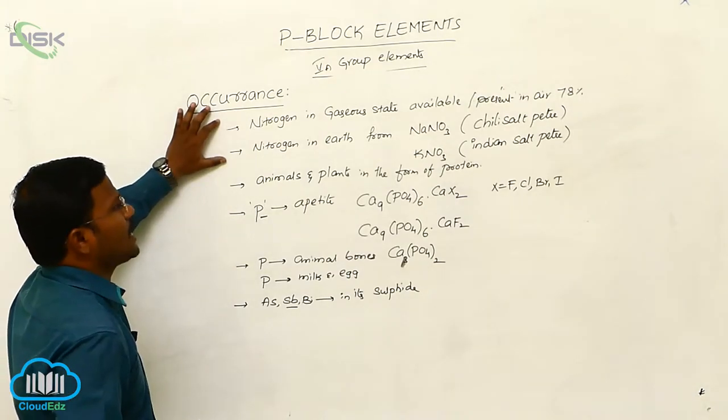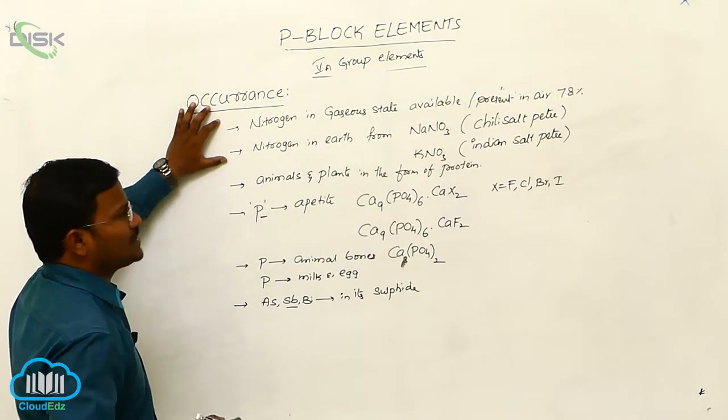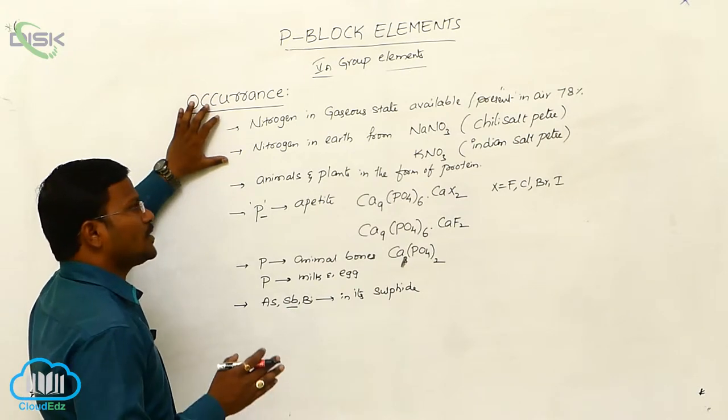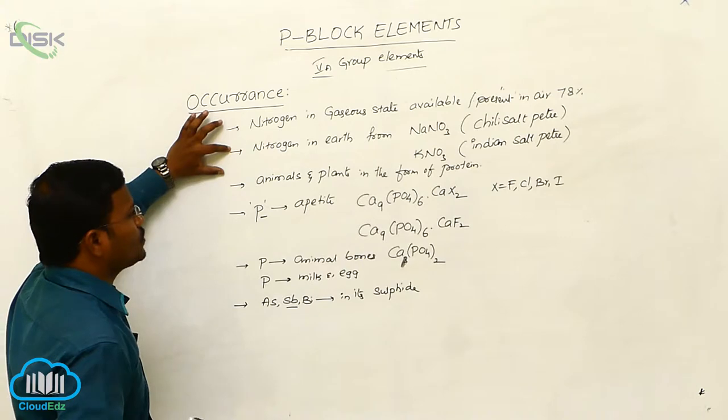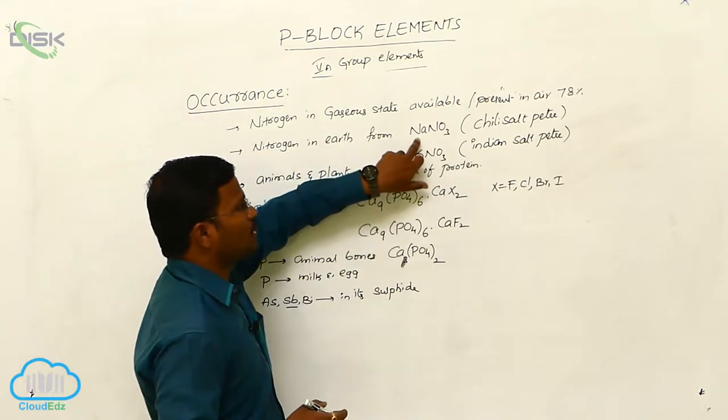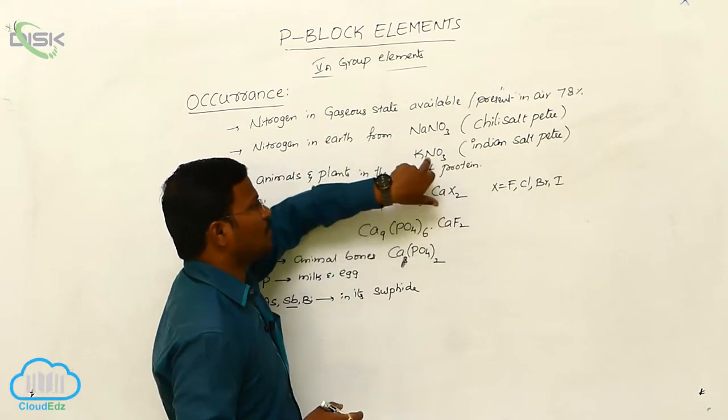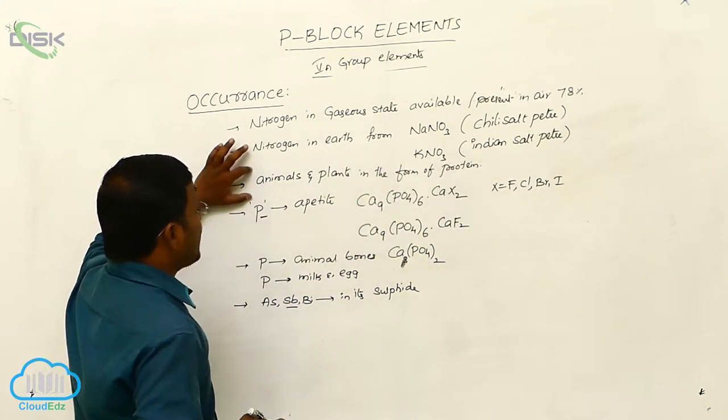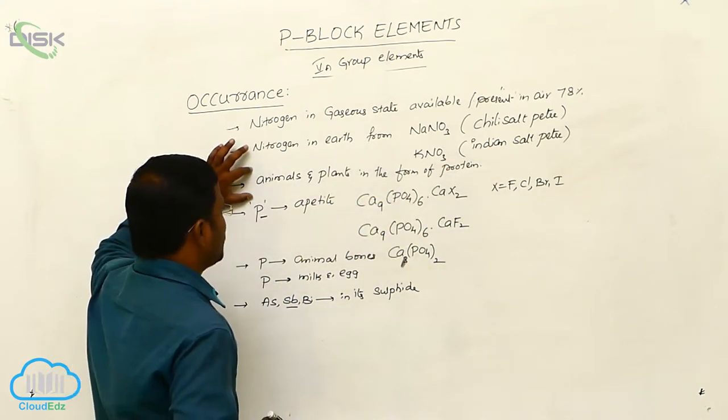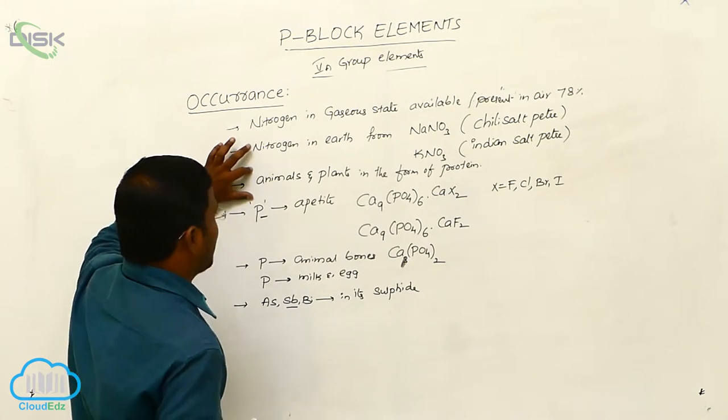Nitrogen in its gaseous state available or present in air, about 78% of volume of air. Whereas, the same nitrogen available in earth in the form of sodium nitrate, which is called as chili saltpeter, potassium nitrate, which is called as Indian saltpeter. Whereas, the same nitrogen found to exist in protein molecules, which may be identified in animals and plants.